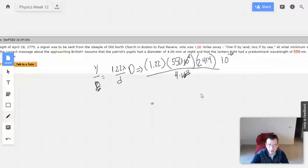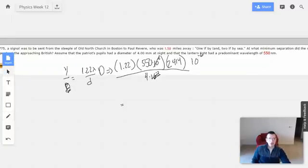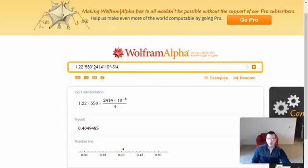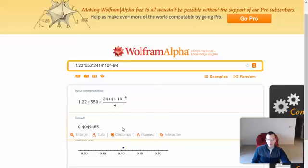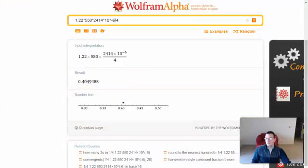Looks like we're doing that right. So, okay. 1.22, 550, 2414, 10 to the negative 6th, and 4. That gives us 0.4. Yep.